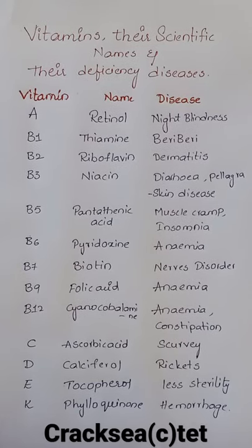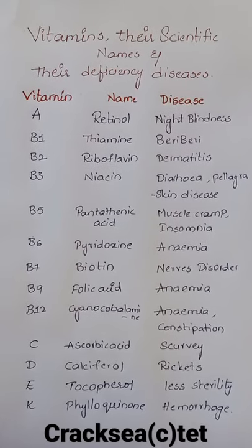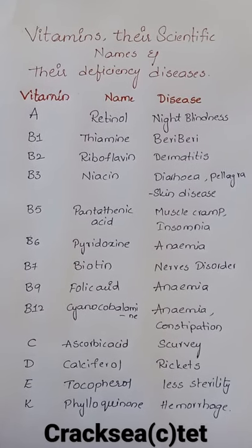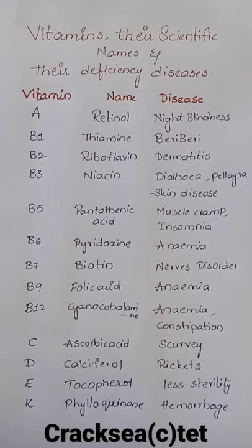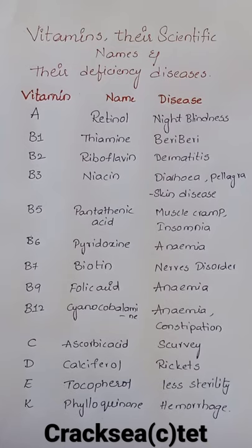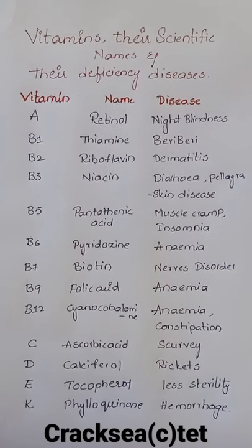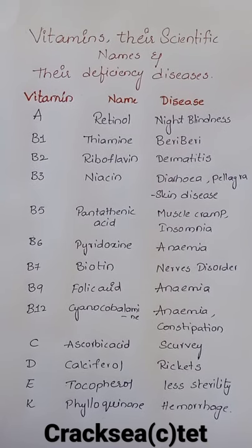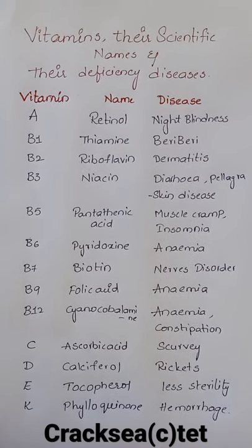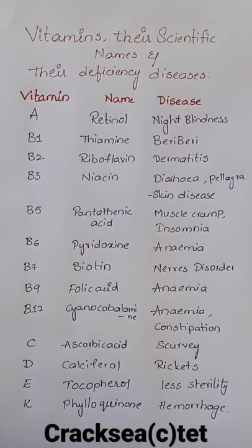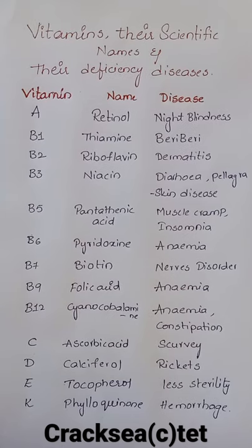Hi friends, let's learn about the vitamins, their scientific names and their deficiency diseases. First one: Vitamin A, scientific name retinol, deficiency disease: night blindness.